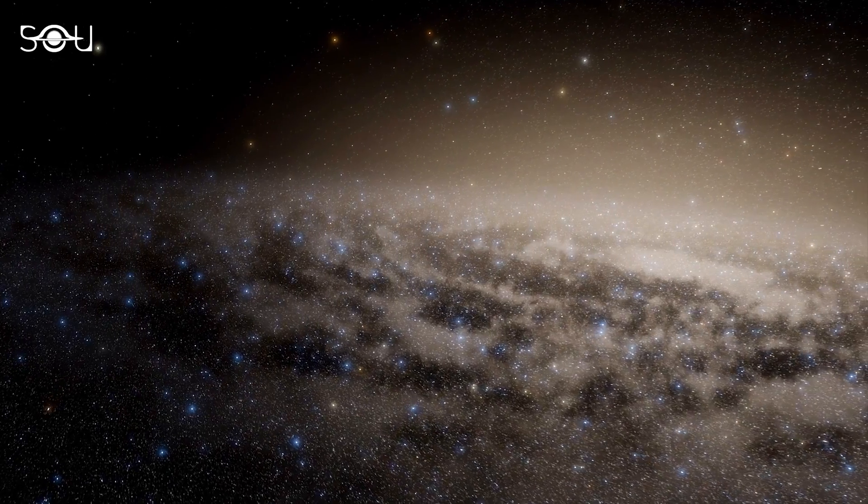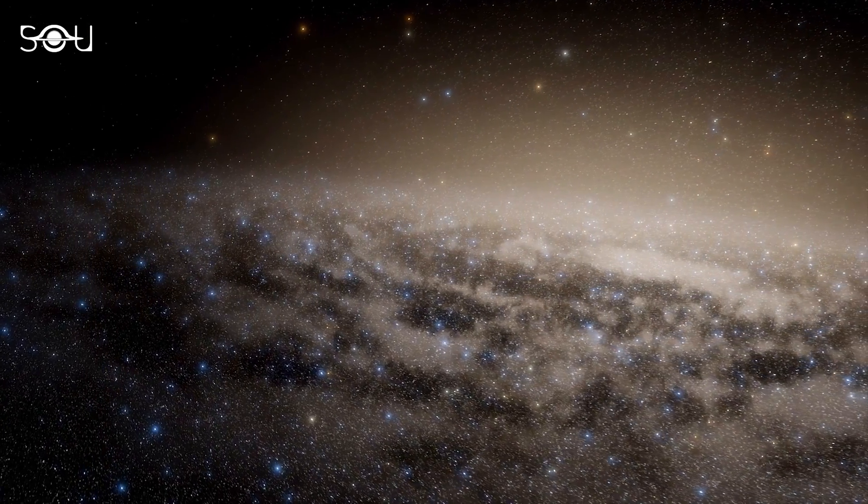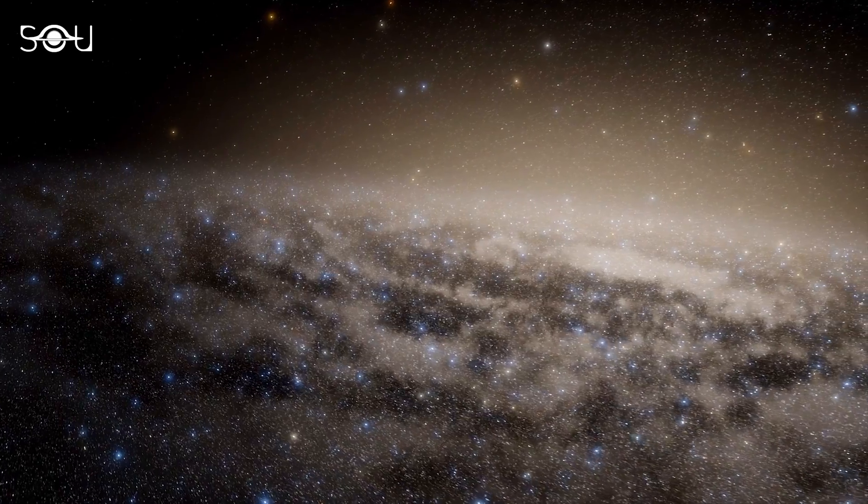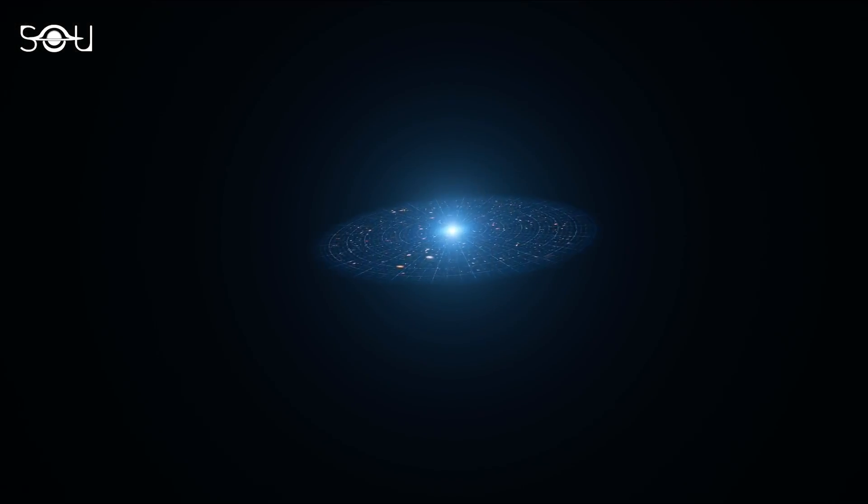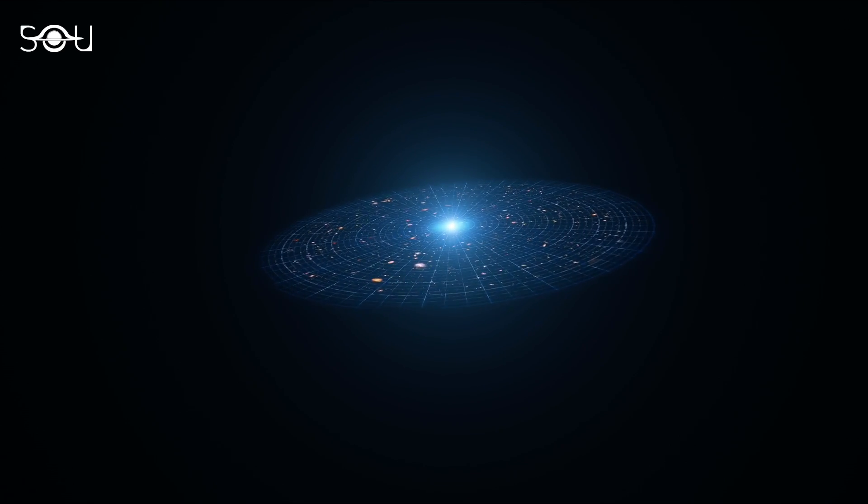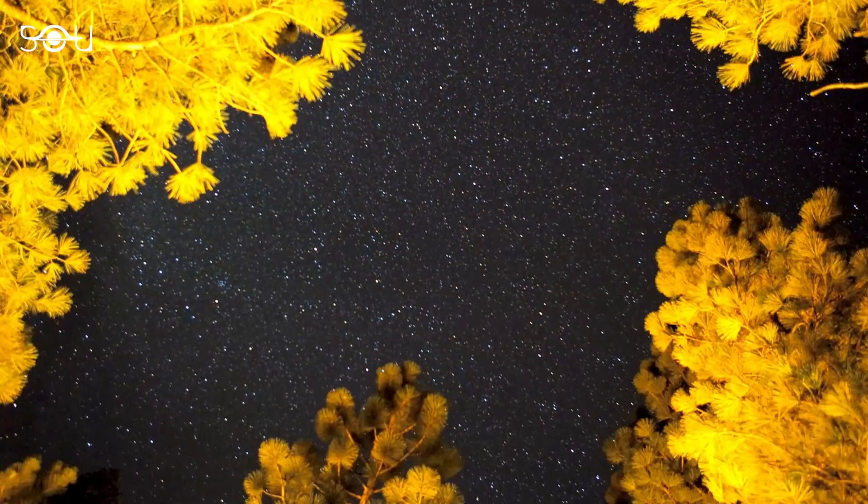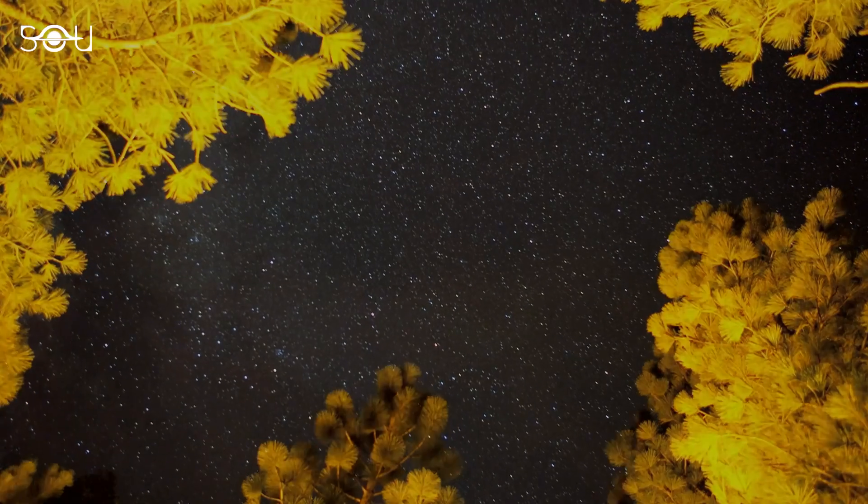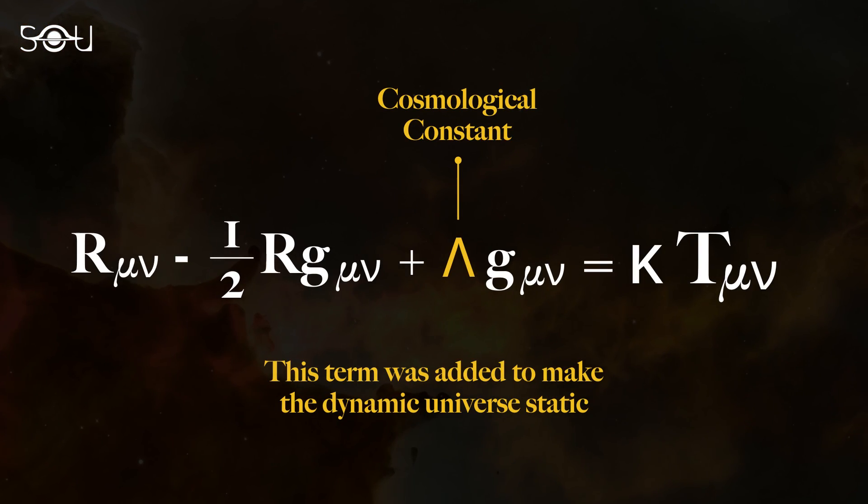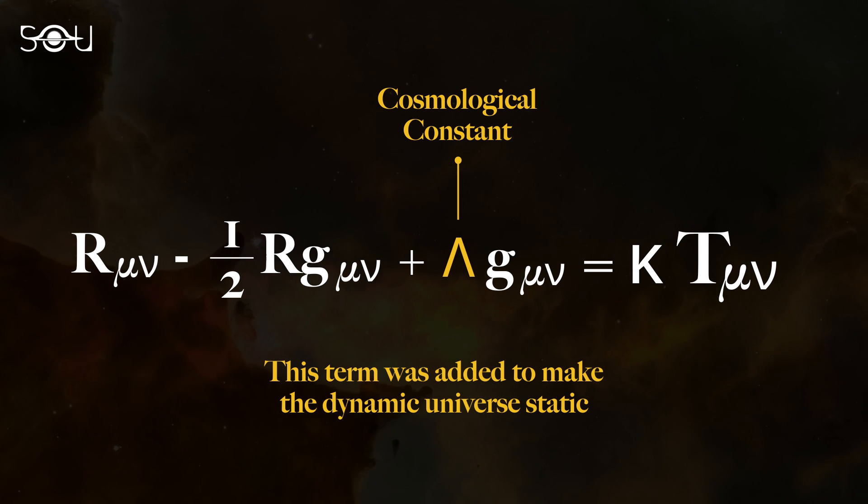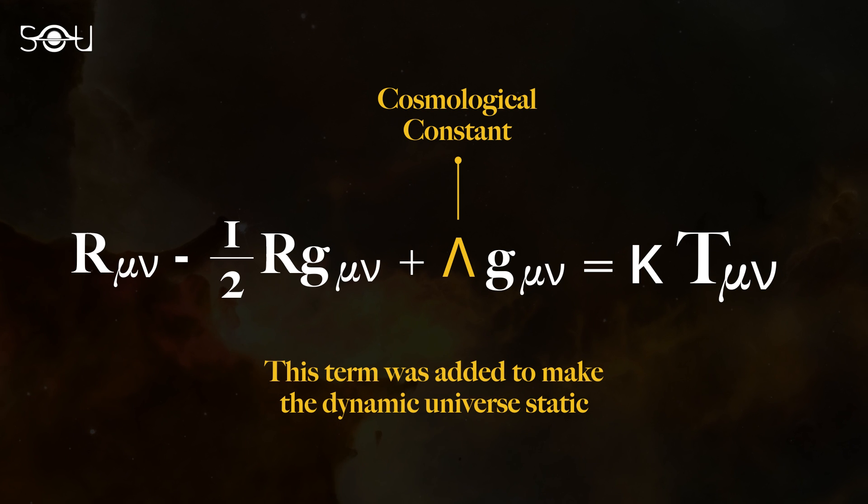In the early 20th century, Einstein and many astronomers believed that the universe was static. But this idea didn't align with his general theory of relativity. Instead, his equations predicted a dynamic universe. So to achieve consistency with the prevailing views, in 1917, Einstein introduced a new term to the field equations, the cosmological constant. This constant ensured that Einstein's math and general relativity and other terms in the field equations were unaffected by the assumption of a static universe.